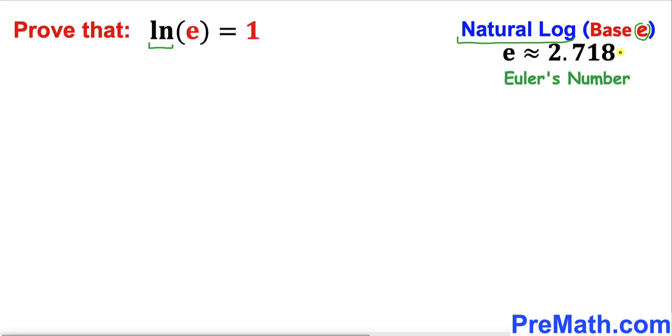where e value is approximately equal to 2.718 and e is Euler's number.